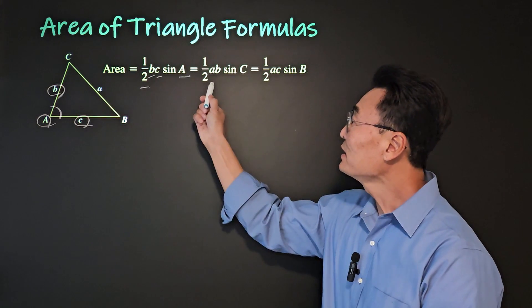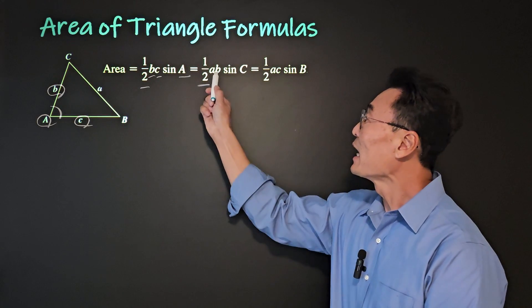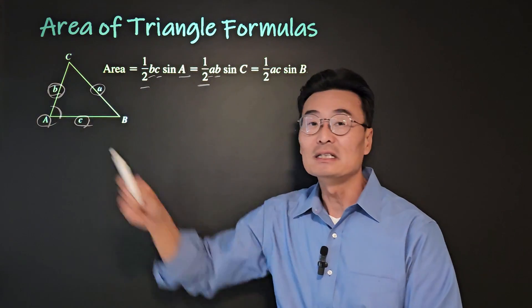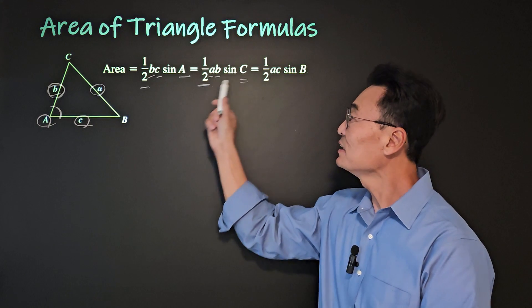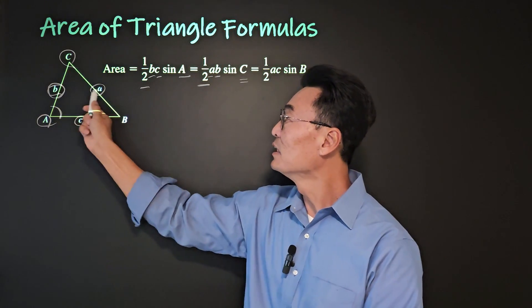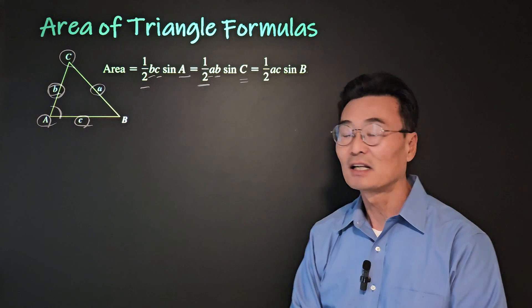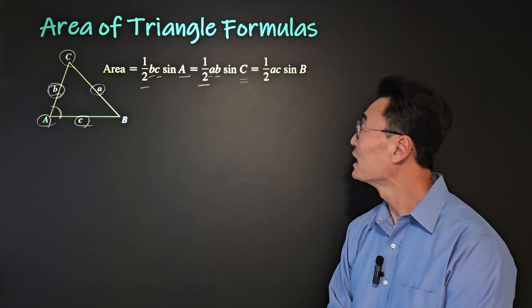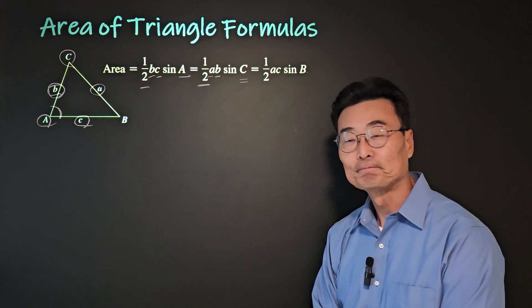Here's another one. Again, take the half of a times b, in this case, will be a and b times sine of angle c, again, the angle that's between the two sides. And of course, the third one is going to be one half a c times sine of b.